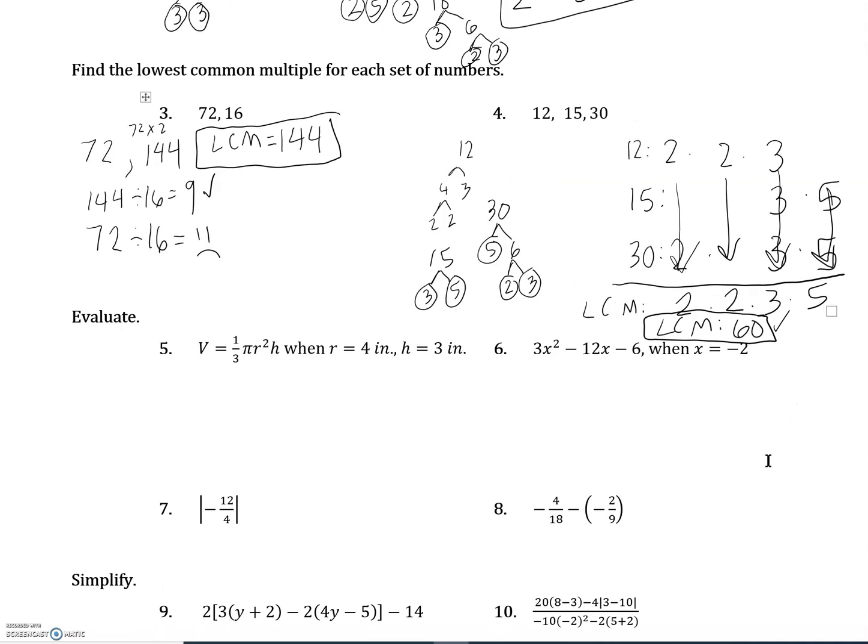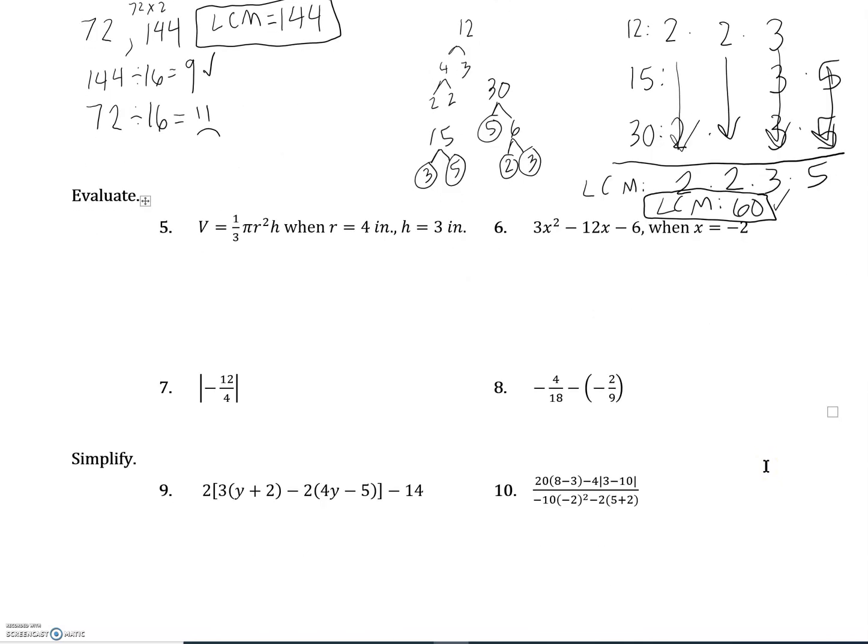All right, let's move on to number five and six where we're asked to evaluate. This is going to mean we're going to plug in some values. Here on number five, we're going to give in a formula for volume and we're going to plug in what we know. We know the radius of this cone. I'm not going to plug in pi yet, I'll just leave it as its symbol. The radius is 4 and that's being squared, and the height of this cone is 3 inches.